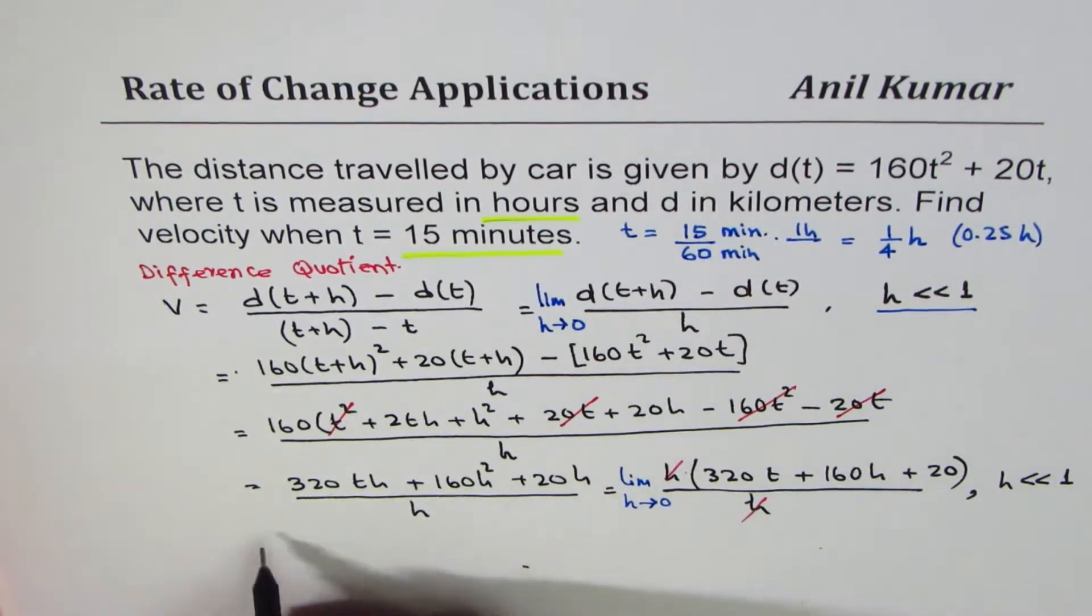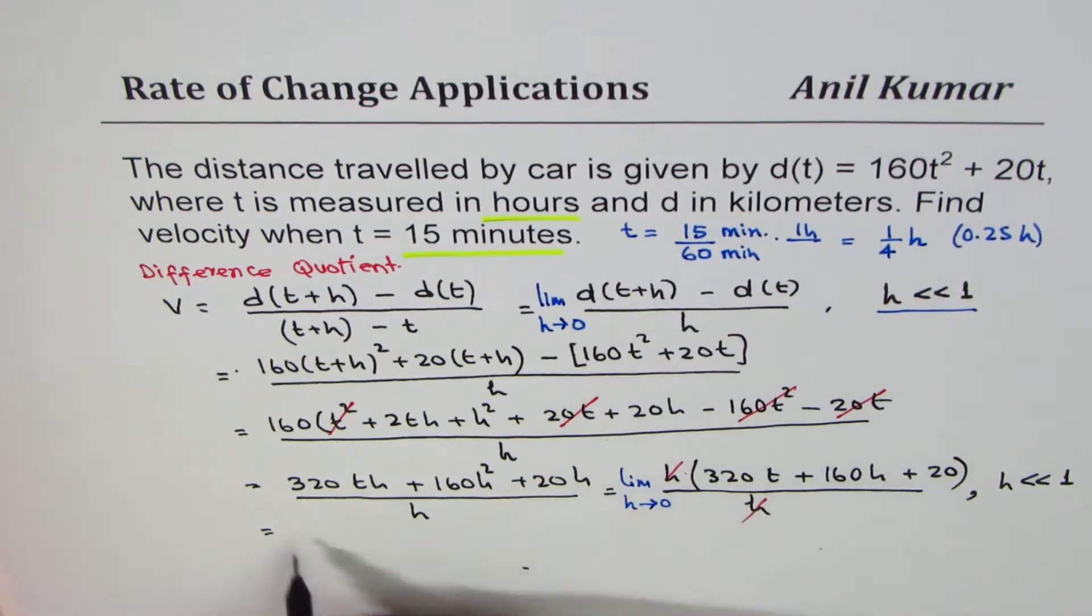So what you get here really is 320t + 20. So that becomes a general expression for velocity.